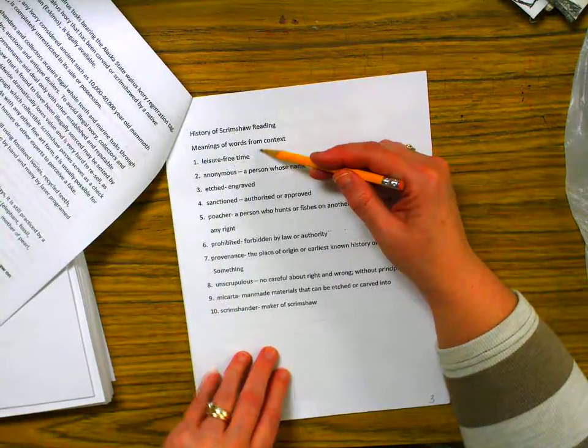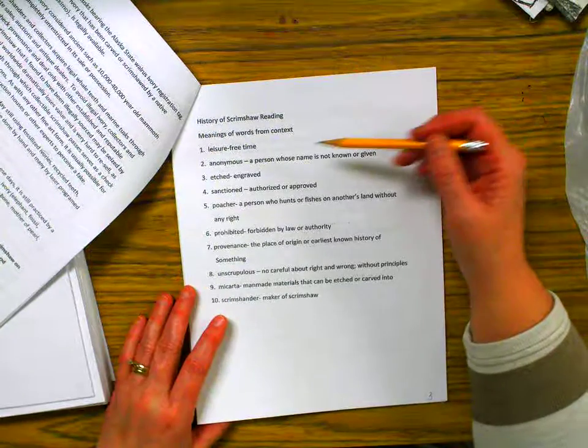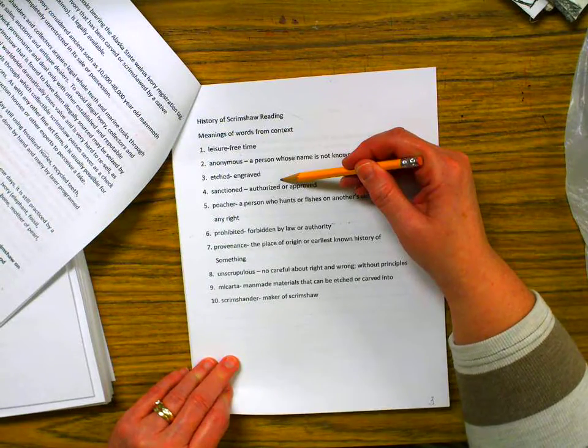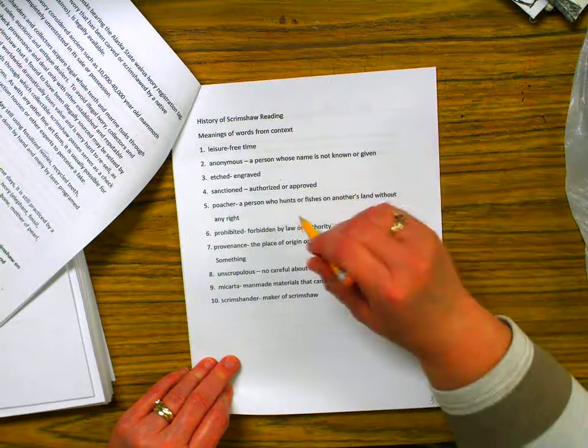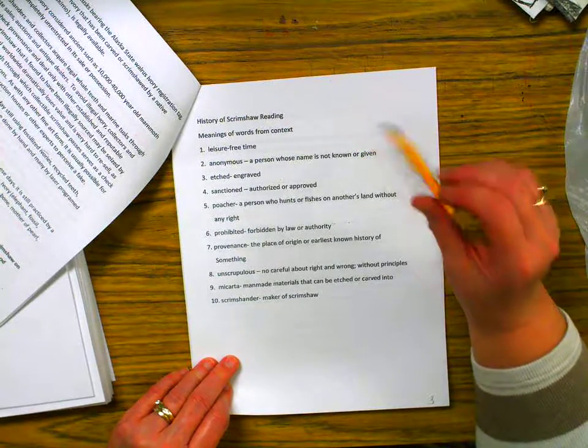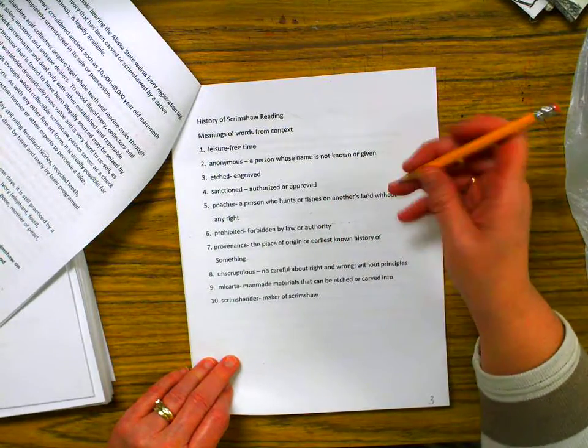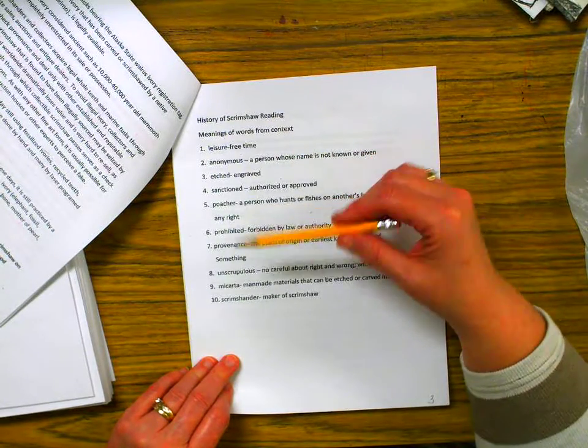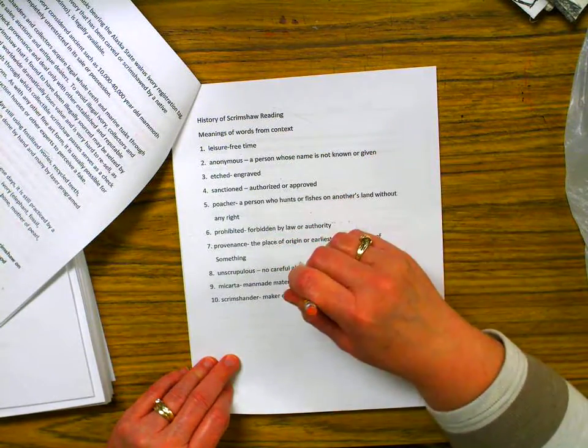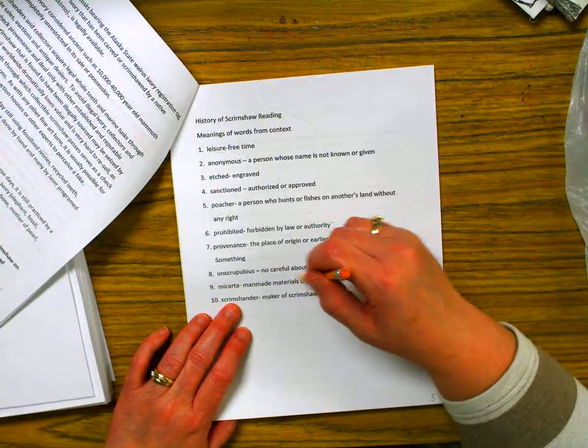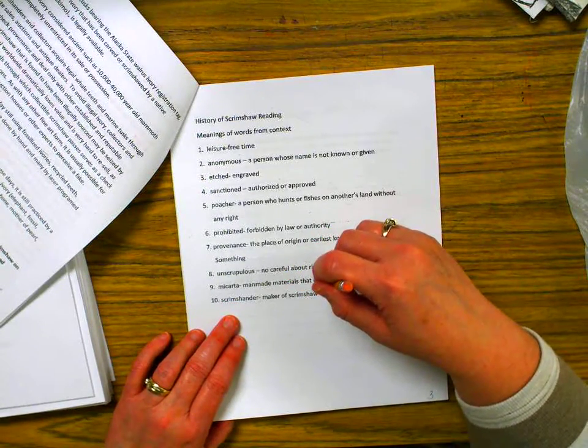Now, the words that you may not have known, we talked about free time, we talked about anonymous being unknown, etched is engraved. If something is sanctioned, it's authorized or approved. A poacher is somebody who hunts on somebody else's land without a permit or any right to. Prohibited means forbidden. Provenance, the place of origin or earliest known history of something. Unscrupulous. If you're an unscrupulous person, you don't care about right or wrong. Micarta is man-made materials that can be etched into or carved into, and then a scrimshander.